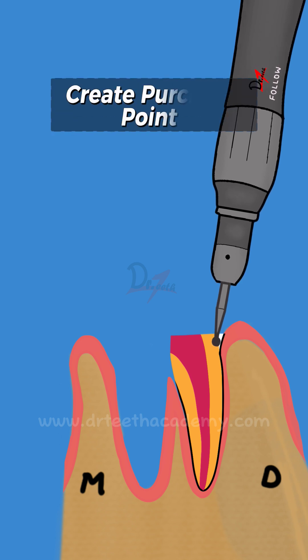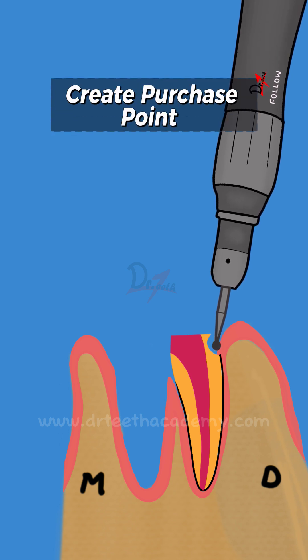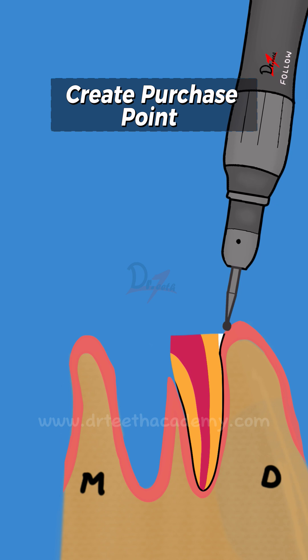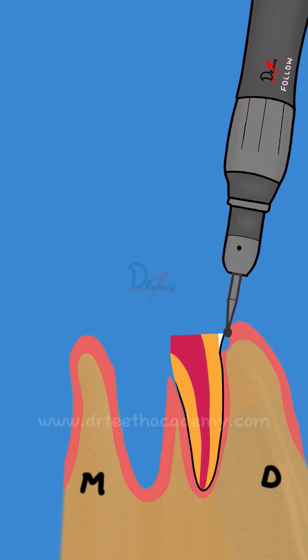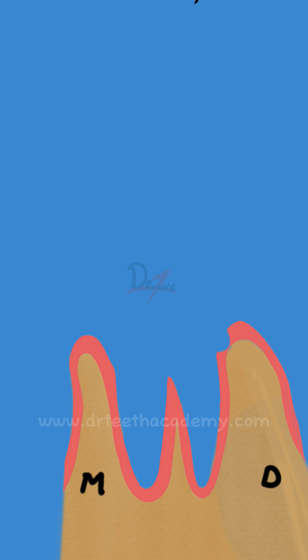Then you can create a purchase point on the root if the root is submerged just below the alveolar bone, or you can create a purchase point on the bone itself. This will help us to luxate the broken fragment.